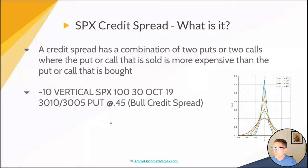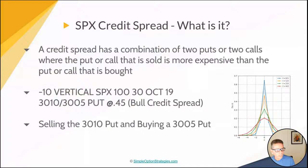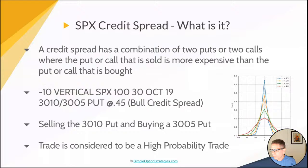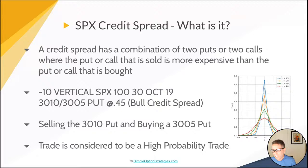You're selling the 3010 and buying the 35. This is considered a high probability trade because you don't have to be specific or exact — you just have to make sure your position stays within a range. As long as the position expires or gets close to expiration with less credit remaining, you buy it to close and keep that credit. You receive the money first, then close the position at zero or a little bit of premium so you keep most of it.